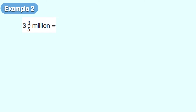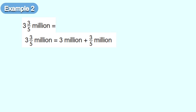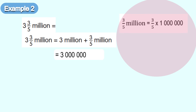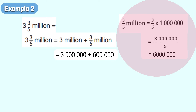Example two: 3 and 3 over 5 million. You can also split the mixed number to 3 million plus 3 over 5 million. Multiply 3 over 5 with 1 million — you will get 600,000. So, 3 million plus 600,000. The answer will be 3 million 600,000.